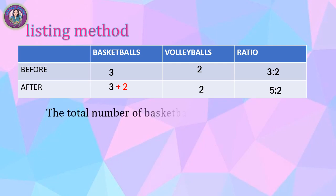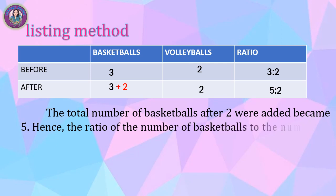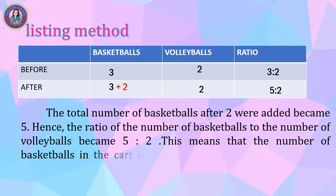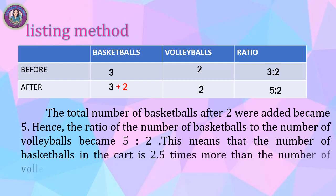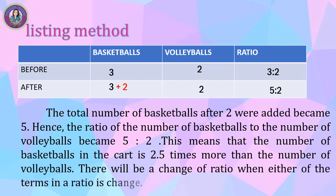The total number of basketballs after two were added became five, hence the ratio of the number of basketballs to the number of volleyballs became 5 to 2. This means that the number of basketballs in the cart is 2.5 times more than the number of volleyballs. There will be a change of ratio when either of the terms in a ratio is changed.